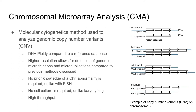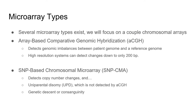Where microarrays outshine FISH and karyotyping is in their ability to detect microduplications and microdeletions genome-wide at a higher resolution. Microarrays come in various types, but the ones more commonly used and tested on include array-based comparative genomic hybridization, or aCGH, arrays, and SNP-based arrays. aCGH can detect genomic imbalances such as copy number changes, but it cannot detect uniparental disomy — you need SNP arrays to do that.